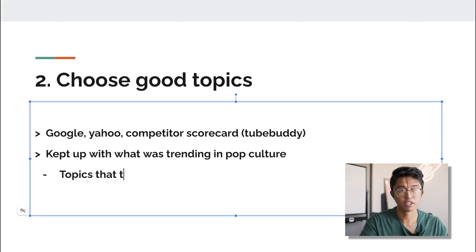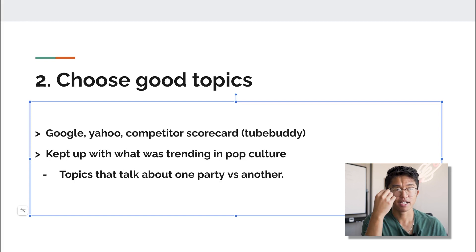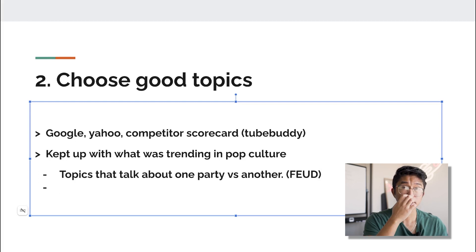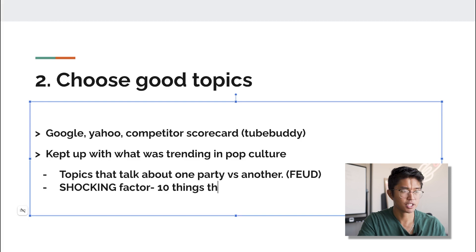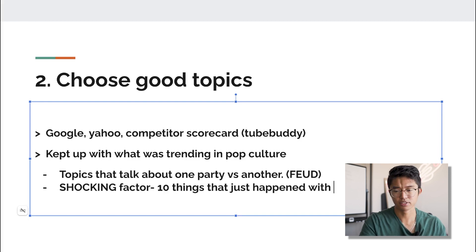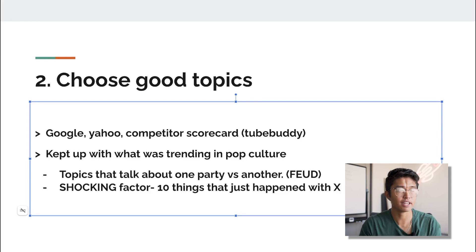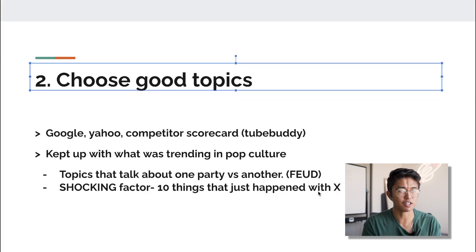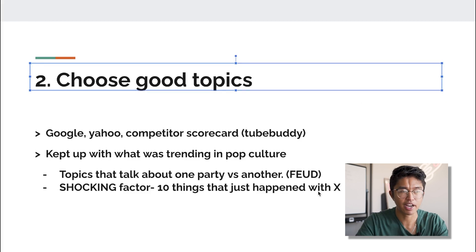Some staple topics that have worked for me are topics about one party versus another — for example, Jake Paul versus Anderson Silva. People love those feud-type topics. The second power topic type is the shocking factor — when someone does something that will amaze or shock people. That happens a lot within the celebrity and sports world, or for example when a favorite TV show gets canceled.